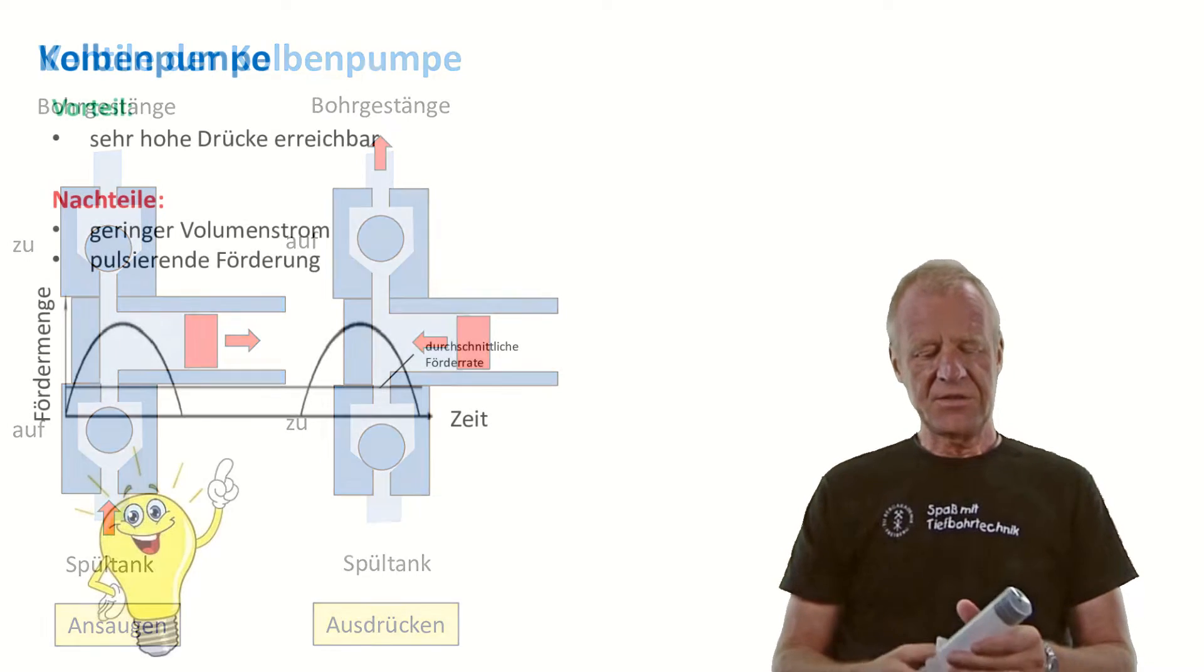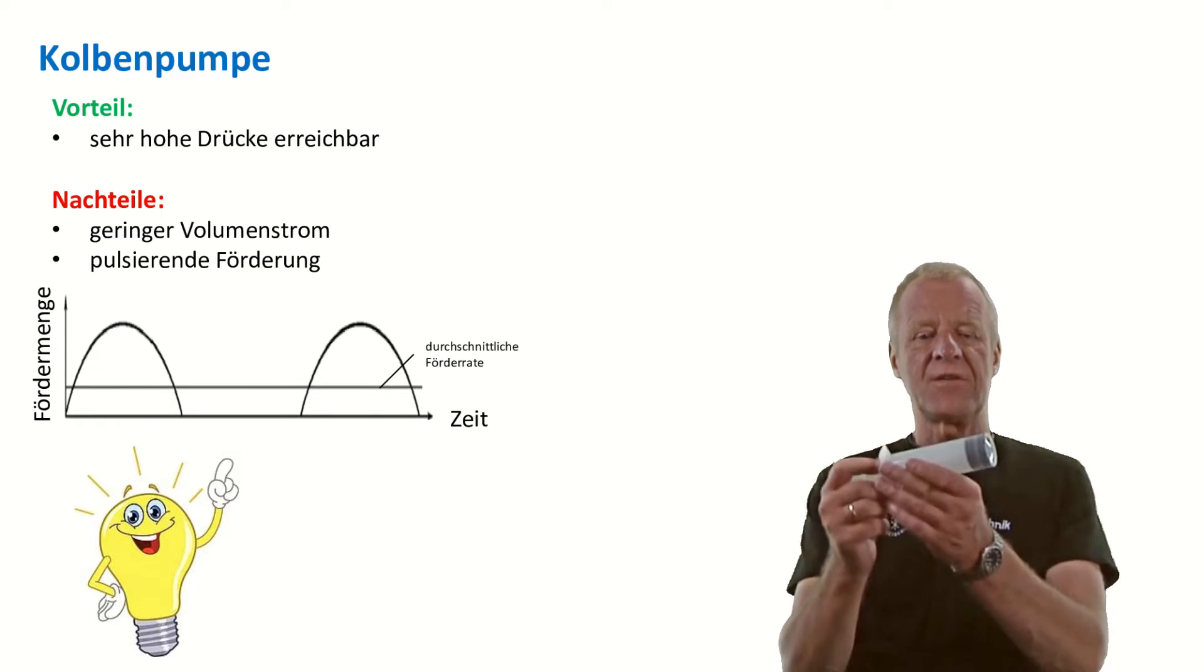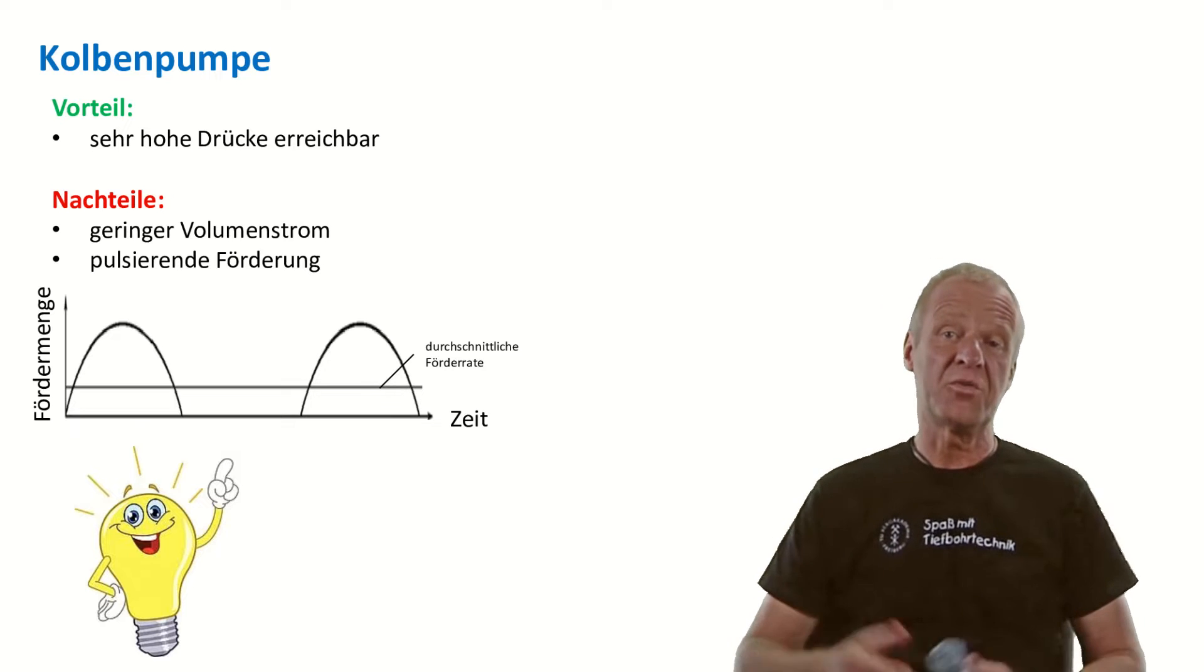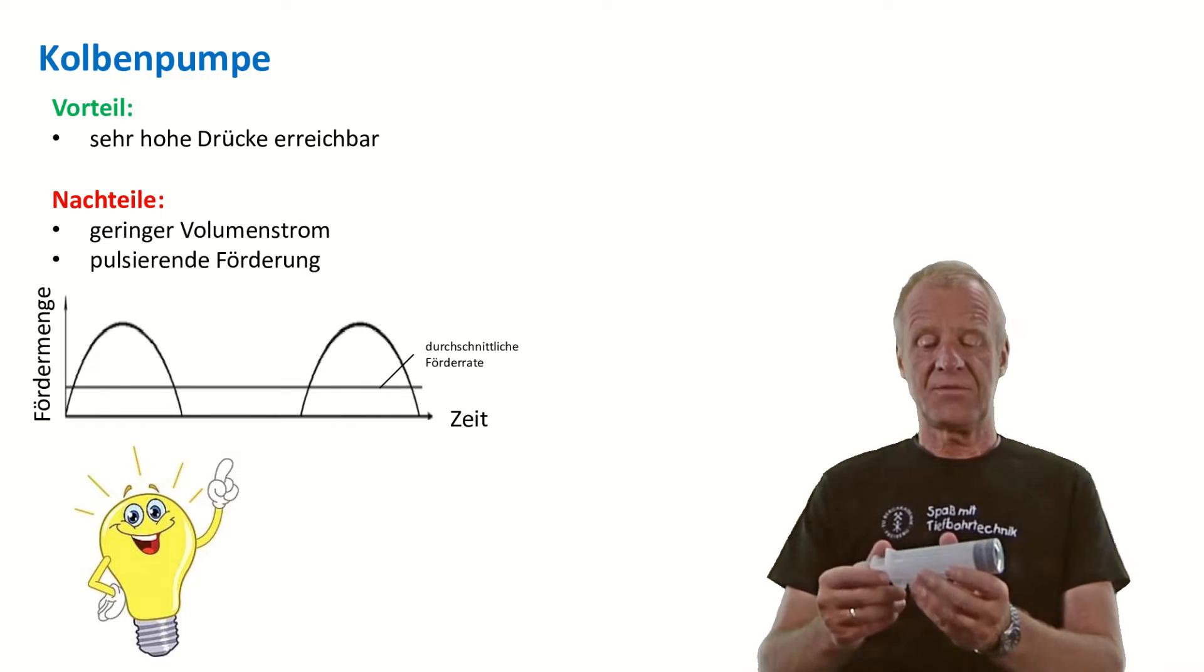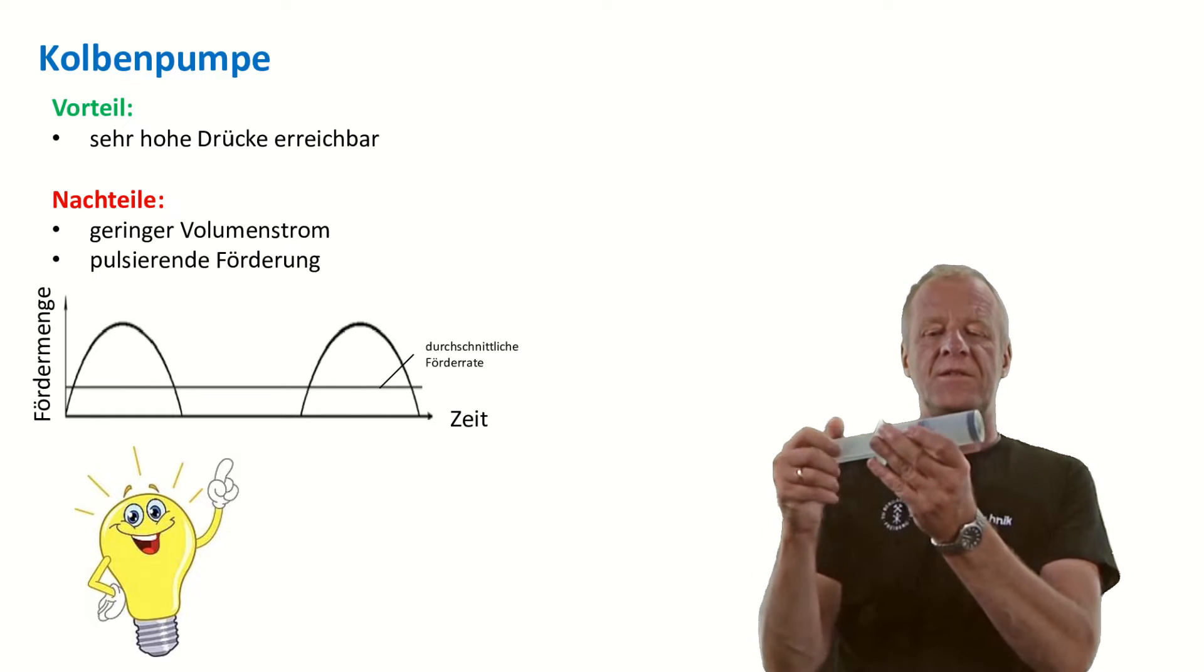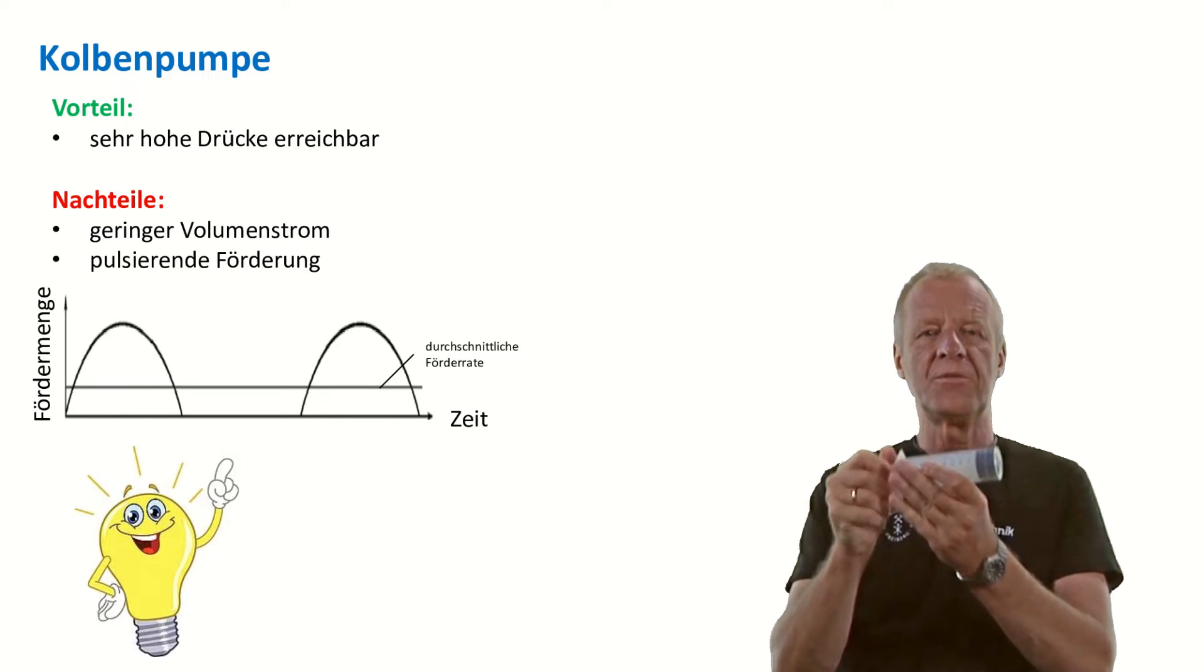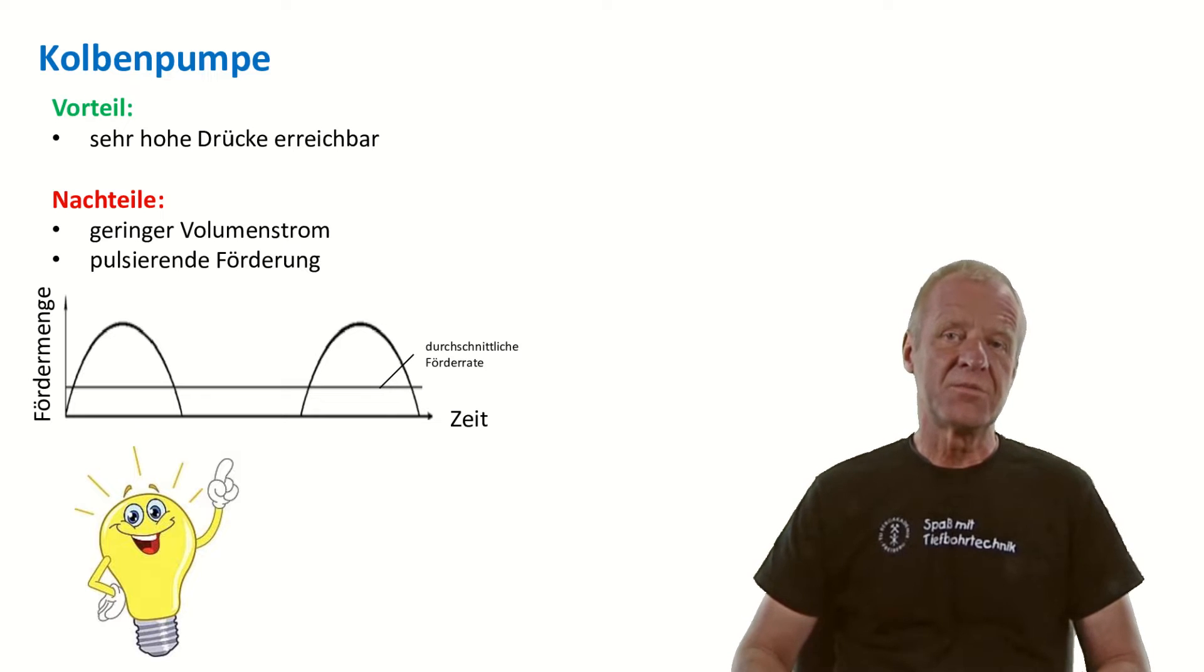As I said earlier, the advantage of the piston pump is that it can deliver the required high pressure, which is very good, but it also has disadvantages. One disadvantage is that the flow rate of a piston pump is relatively small. We usually need much more. The other disadvantage is that piston pumps do not provide continuous flow. Instead, the flow is intermittent whenever the piston moves forward. But of course, engineers have come up with solutions to these problems.